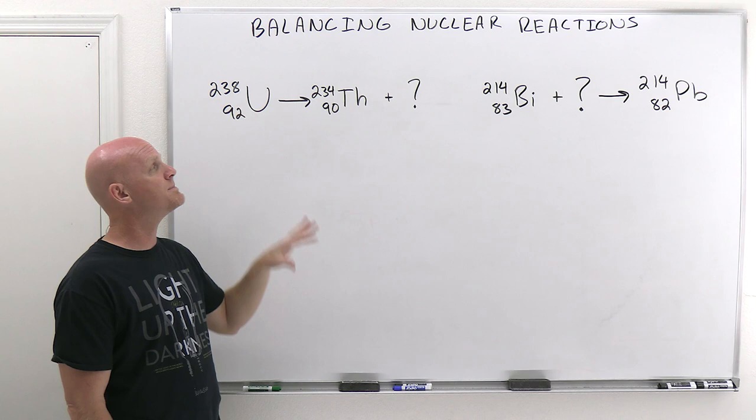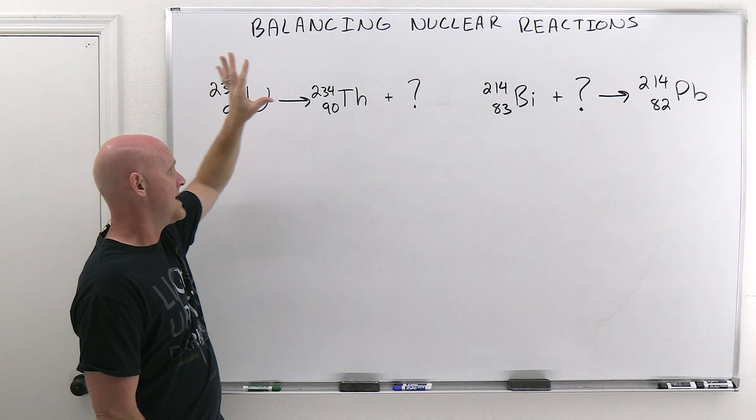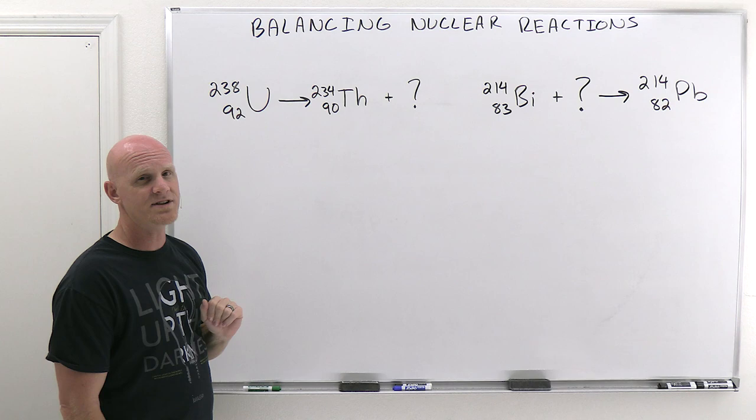And so even though we're going to balance the mass numbers here, just keep in mind the masses are never going to completely balance because some of that mass is lost and converted to energy. But we will balance these mass numbers, and that's how you're going to predict what these mystery particles are in these next couple of reactions, is you're going to figure out what the mass number is and what the atomic number is in order to balance the mass number and the atomic number on both sides of that arrow.